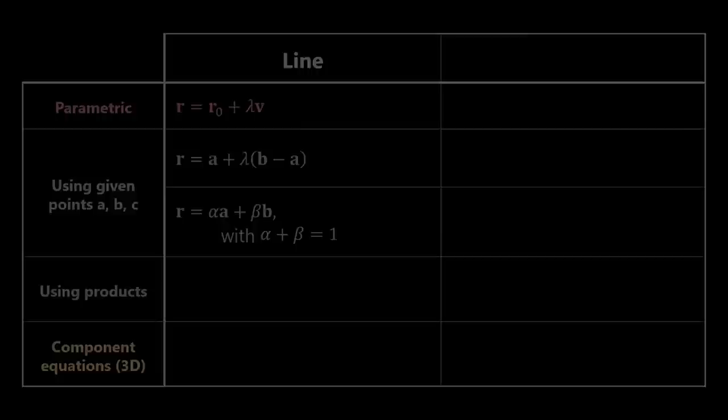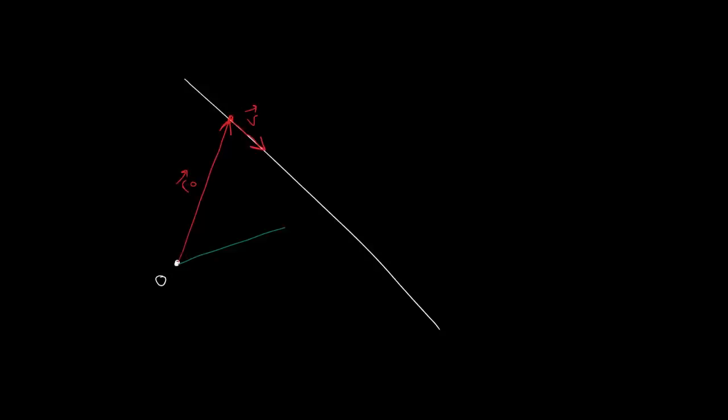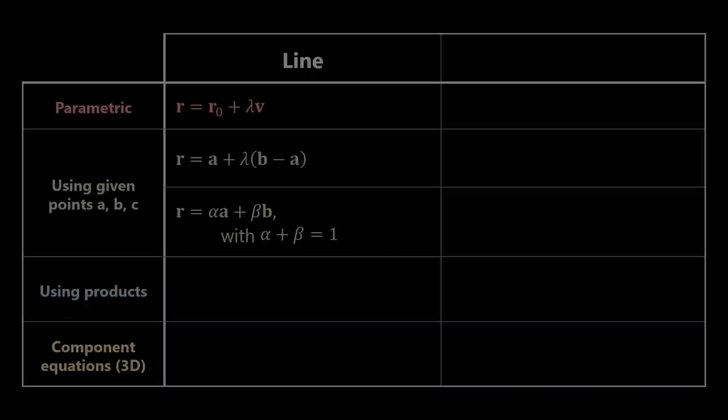The first one is by using the cross product. Given a line, notice that the vector joining r0 with any point in the line r, which is given by r minus r0, will always be parallel to vector v. Therefore, the cross product of both must be zero, so we can write the equation of a line as (r minus r0) cross v equals 0.